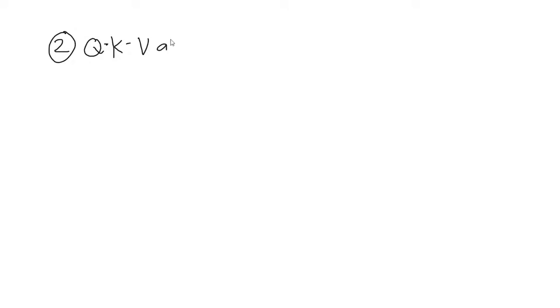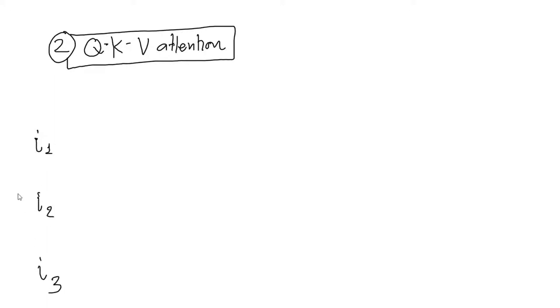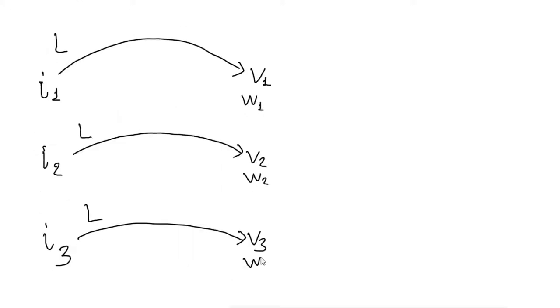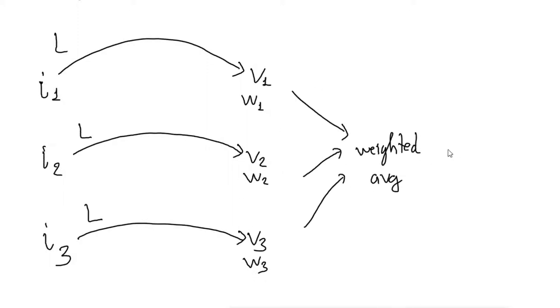The next question is: how is this specifically done in the 'Attention Is All You Need' paper? They use what I'll call the query-key-value attention mechanism. Suppose the input is a set of three items i1, i2, and i3. To perform attention pooling we need two things: first, the three input features — here we use a linearly transformed version called values v1, v2, v3; second, the weights w1, w2, and w3, which we then use to perform a weighted average to produce the output.